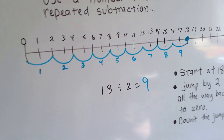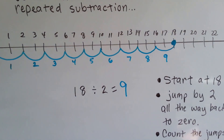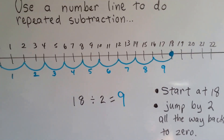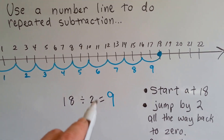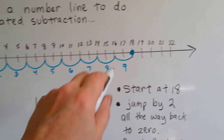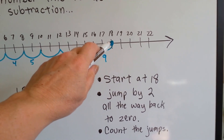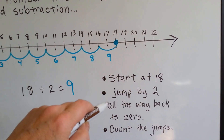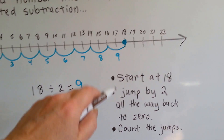We can also use a number line to do repeated subtraction. If we have 18 divided by 2, we start on the number line at 18 and we jump by 2's all the way back to 0.